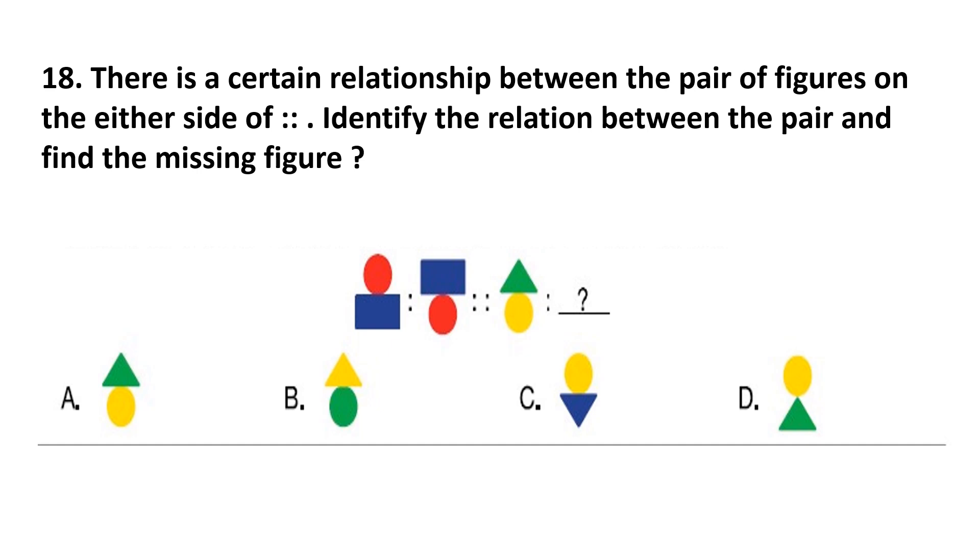Question number 18. There is a certain relationship between the pair of figures on the either side of colon. Identify the relation between the pair and find the missing figure. These figures are given and we can see that the shapes are absorbed down. Colors are same. Blue rectangle is blue rectangle here and red circle is red circle here. So from this figure, we can see that the triangle will go down and circle will be up. So answer is option D.